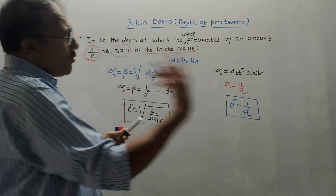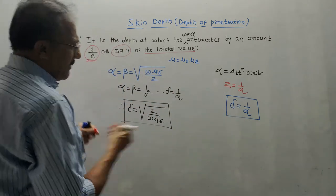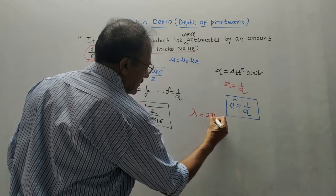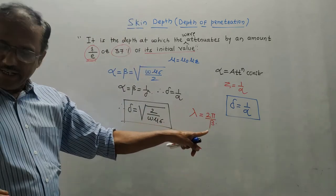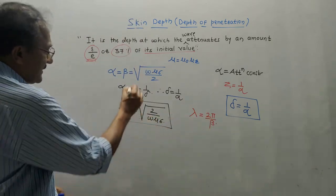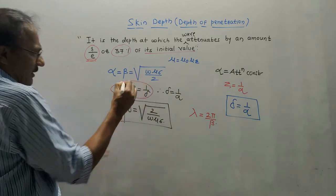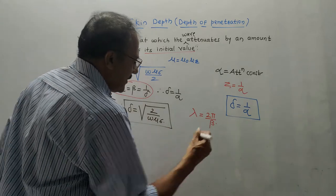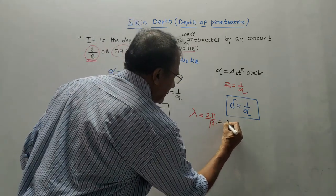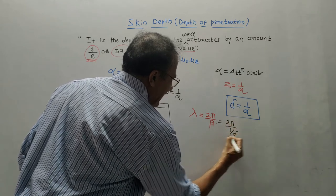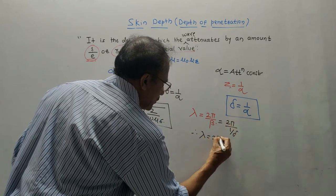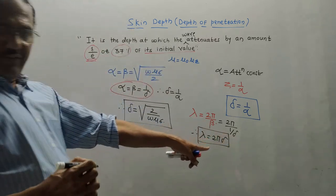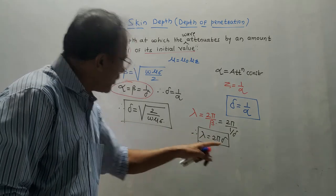There is one more parameter, which is known as lambda — the wavelength. The generalized expression is lambda equals 2 pi divided by beta, where beta is the phase shift. Since alpha equals beta equals 1/delta, substituting 1/delta for beta gives lambda equals 2 pi divided by 1/delta. Therefore, lambda equals 2 pi times delta. This is the expression of wavelength for a good conductor in terms of delta.